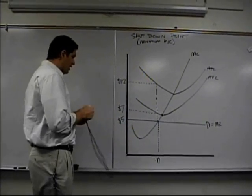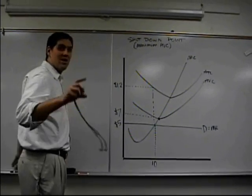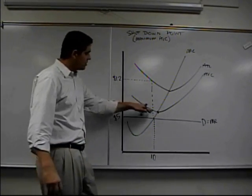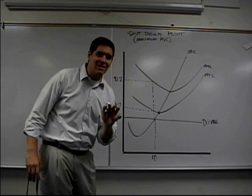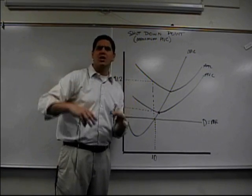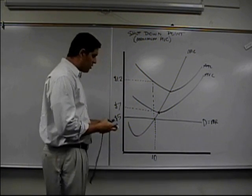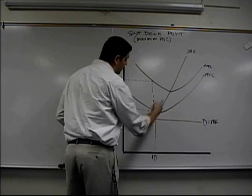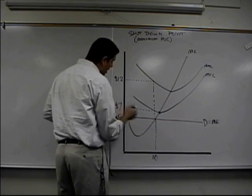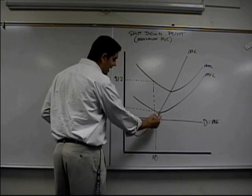The first thing you already know is that this firm should produce zero, nothing. They should shut down. They should make nothing because the price has fallen below AVC. But let's say they didn't. Let's say they decide to produce, screw that shutdown rule they say. They decide to produce where MR equals MC, and we're going to say right here, current price is 5, quantity is at 10, where MR equals MC.